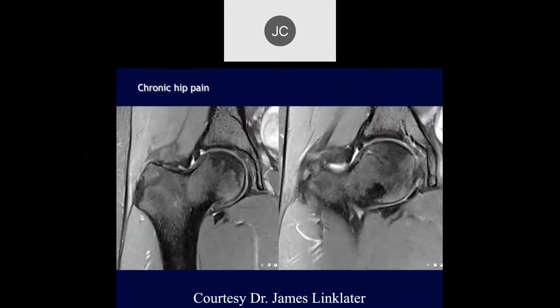Looking at that superior labrum, I'm not sure that's a tear. It looks very smooth. I think that's a sublabral recess, maybe. Chondrolabral junction defect, right? Yeah, it could be a tear. A little bit of a step off down here, maybe a little bit of coxa vara.